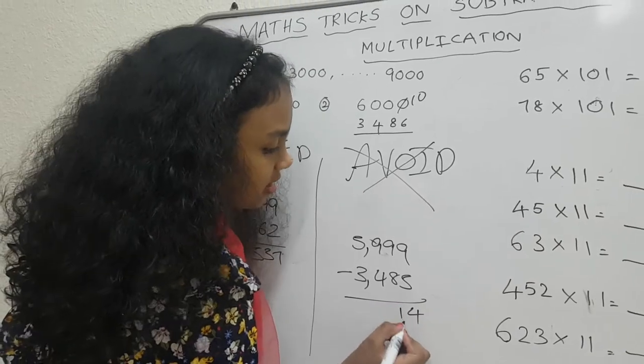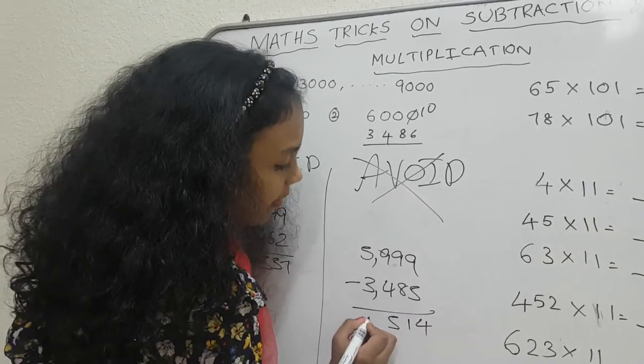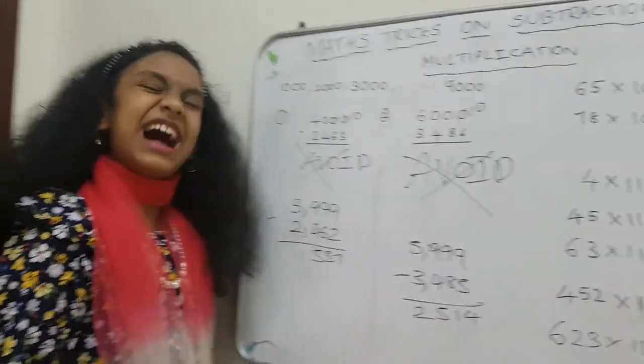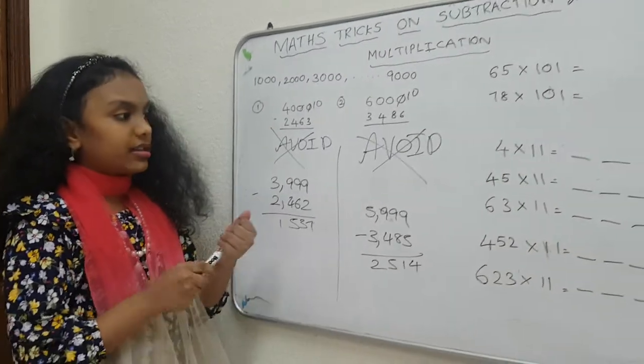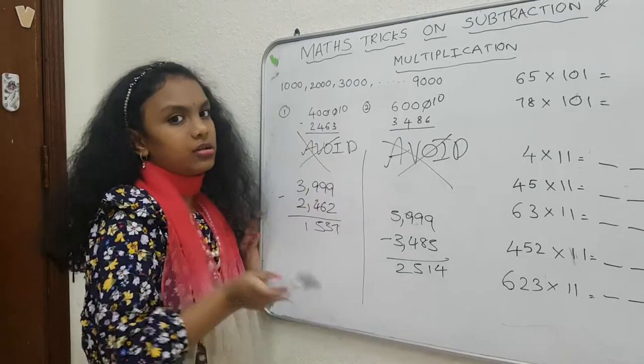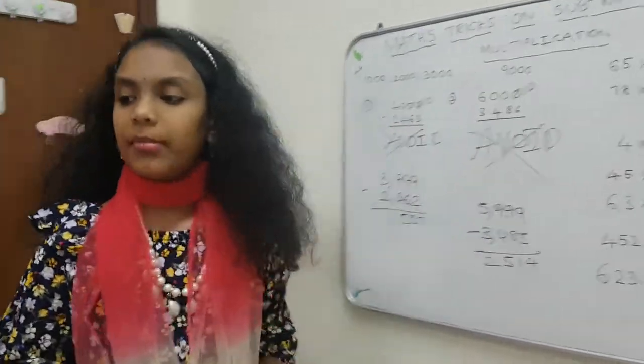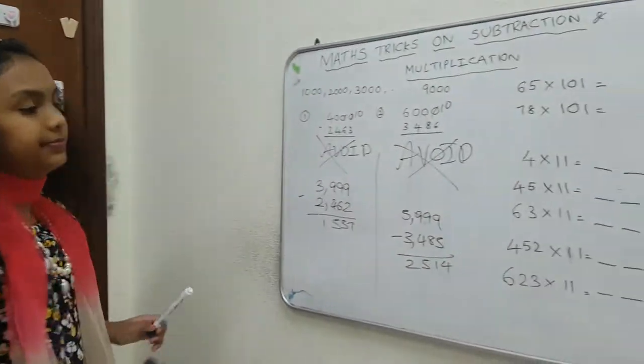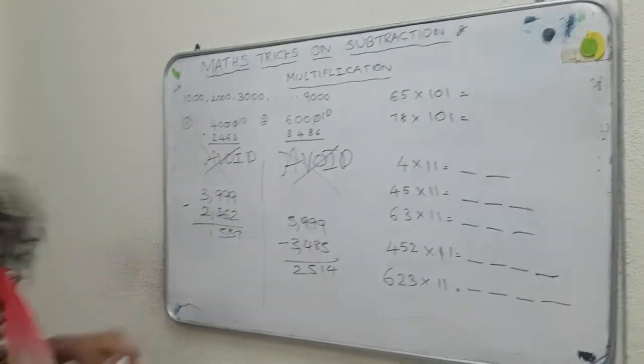9 minus 5 is 4. 9 minus 8 is 1. 9 minus 4 is 5. 5 minus 3 is 2. Done. So you have to avoid this trick, but it only works for 1000, 2000, 3000 and so on till 9000, okay? Remember that. You need to remember that. So let me just go for the next trick.